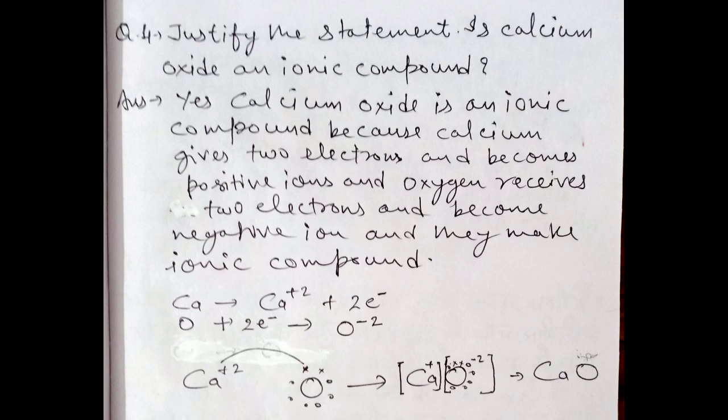Aap idhar dekh sakte hain — calcium ne apne do electrons oxygen ko de diye. Calcium ke electrons cross ya plus se dikhaye hain aur oxygen ke round shape mein. Ab calcium plus two ka charge aa gaya aur oxygen mein minus two aa gaya. Donon ne electrovalent bond bana liye — ionic bond bana liye. Normally isko CaO likha jaata hai.